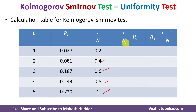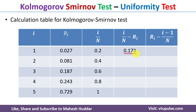Next, we need to find the value of i/n minus Ri. We know the value of i/n and we know the value of Ri, so we calculate i/n minus Ri. That is 0.2 minus 0.027, giving 0.173. Next, 0.4 minus 0.081 equals 0.319. Similarly, we calculate the remaining values.